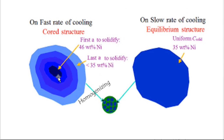When the nickel diffuses during homogenizing, a uniform structure is obtained throughout the grain. This completes the solidification discussion for isomorphous alloys.